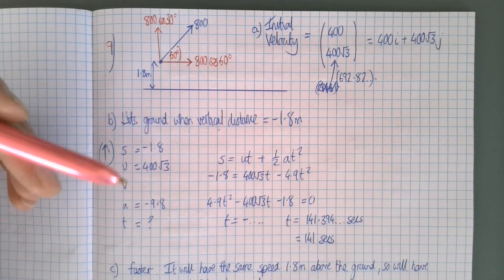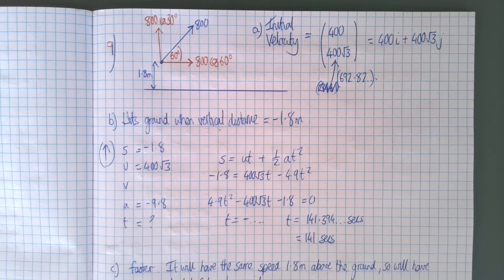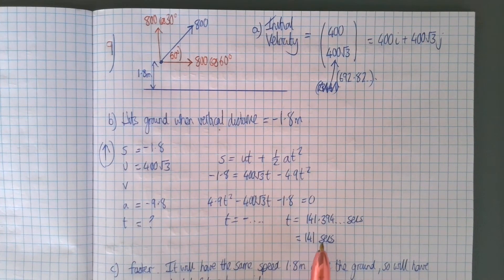So it's just the usual quadratic in t squared. You get a negative answer which you can ignore. I was a bit worried that seemed like quite a long time for the bullet to be in the air but yeah that is correct.